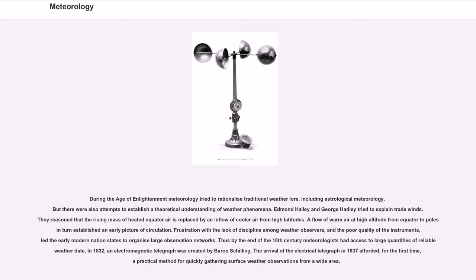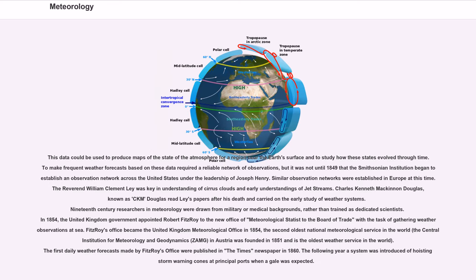In 1832, an electromagnetic telegraph was created by Baron Schilling. The arrival of the electrical telegraph in 1837 afforded, for the first time, a practical method for quickly gathering surface weather observations from a wide area. To make frequent weather forecasts based on these data required a reliable network of observations, but it was not until 1849 that the Smithsonian Institution began to establish an observation network across the United States under the leadership of Joseph Henry. The Reverend William Clement Ley was key in understanding of cirrus clouds and early understandings of jet streams. Charles Kenneth MacKinnon Douglas read Ley's papers after his death and carried on the early study of weather systems.